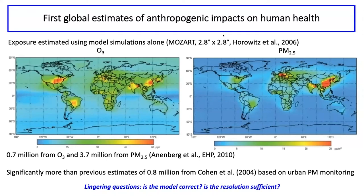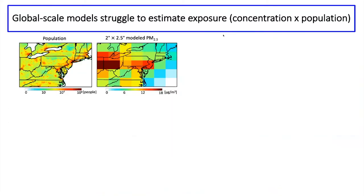The numbers from Annenberg — 0.7 million for ozone and 3.7 million for PM2.5 — were significantly larger than what had been seen before and drew a lot of attention to this issue. It also raises some lingering questions: to what extent is the PM2.5 concentration going into this estimate correct, and are models at the scale sufficient for asking questions about air pollution exposure impacts?